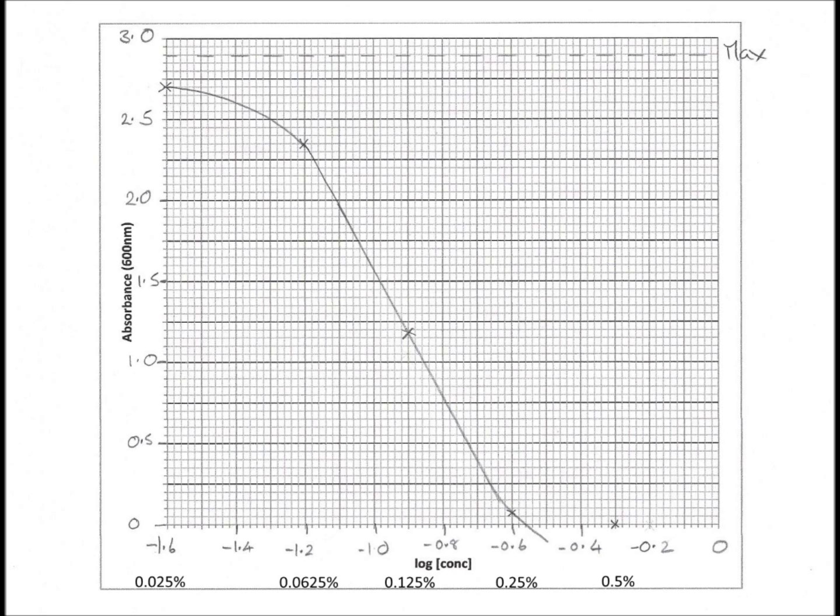In this graph I've plotted absorbance against the log to the base 10 of the concentration of disinfectant, and I've done this because it compresses the x-axis and makes it easier to see the shape of the curve. I have also labelled the x-axis with the actual concentrations of disinfectant, but remember the scale doesn't work for those values. However it should help us to relate the graph to the experimental data.